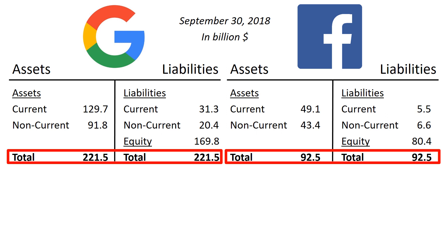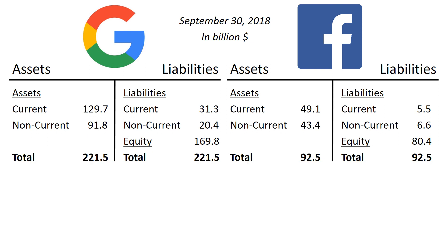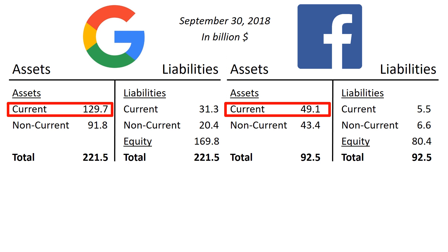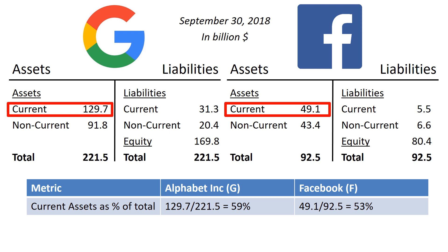Alphabet Inc was incorporated in 1998, Facebook in 2004. In terms of number of years of existence, Alphabet Inc is a few years ahead of Facebook. Let's walk through each of the categories on the balance sheet, starting on the top left, current assets. Current assets are cash and other assets that are expected to be converted to cash within a year. Both companies have a huge amount of current assets — for Alphabet Inc, 59% of total assets; for Facebook, 53% of total assets. This is not unusual for the tech sector, but compared to the Dow Jones Industrial 30 companies or the S&P 500, this is very high.